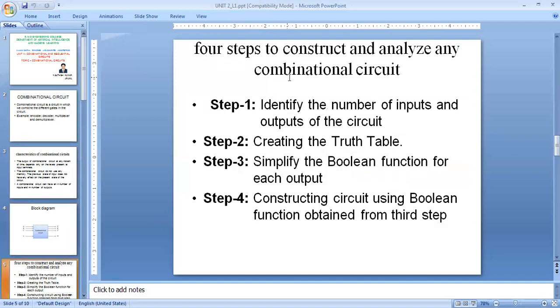So in designing combinational circuits, we have four steps. First step is to identify the number of inputs and outputs of the circuit. Second one is based upon the input and output, we are going to draw the truth table. Step three, we are going to derive the Boolean functions for each output. Then finally, based upon the Boolean expressions, we are going to construct the circuit diagram.